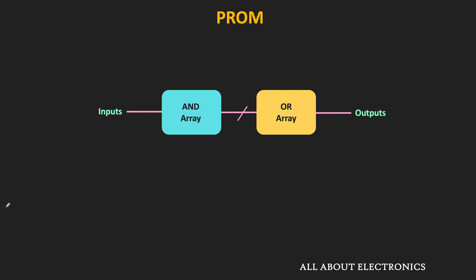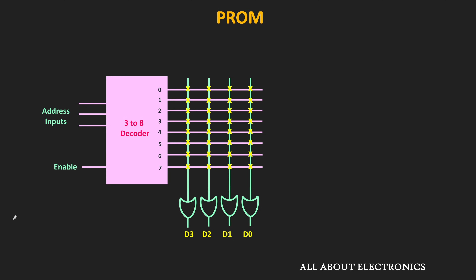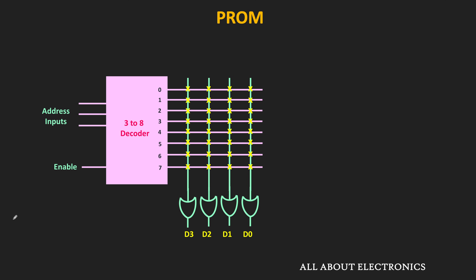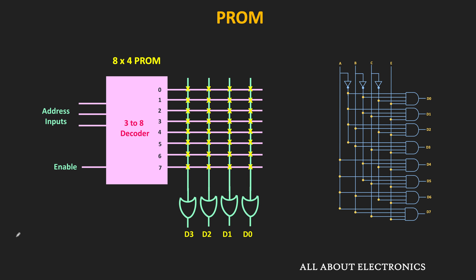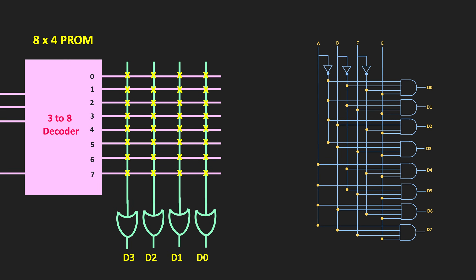In programmable ROMs, this AND gate array is fixed while the OR gate array is programmable. Let us understand this with an 8x4 ROM. Any programmable ROM consists of a decoder and memory cells, and these memory cells are formed by making interconnections between the output of the decoder and the OR gates. In this 8x4 PROM, we have a total of 8 words, so to address these words we require a 3-to-8 decoder. This 3-to-8 decoder consists of 8 AND gates, and each AND gate represents a specific min term. The interconnections between the input and the AND gates are fixed — meaning this decoder acts as a fixed array of AND gates.